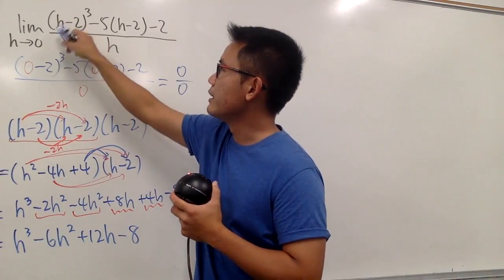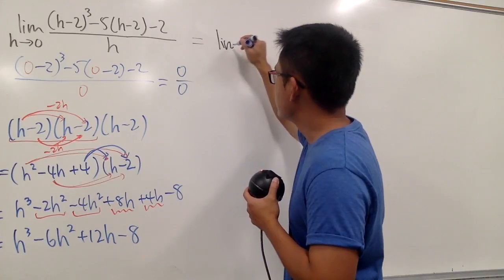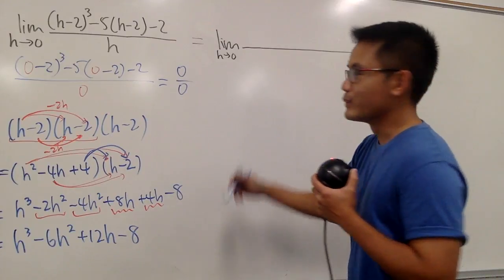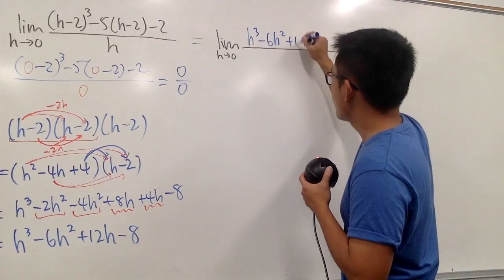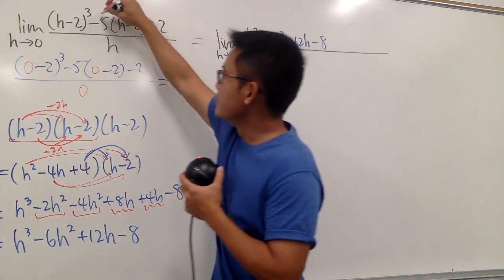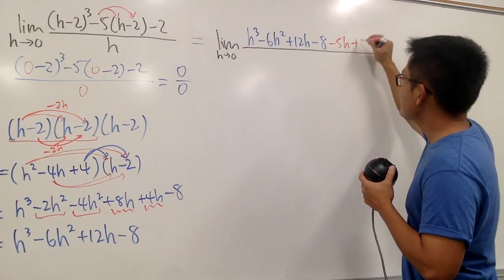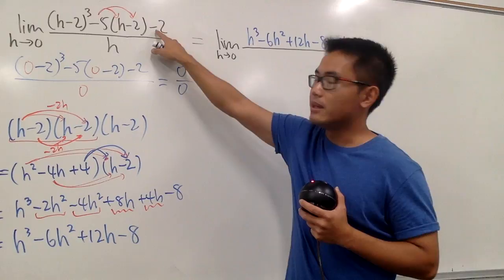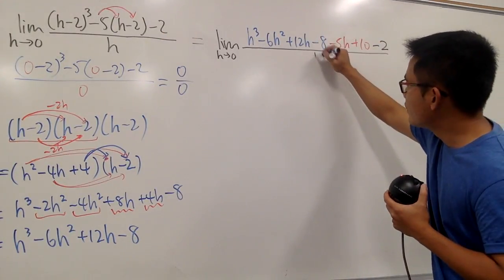For the (h-2) to the third power, this is equal to the limit as h goes to 0. We first put down h to the third power, minus 6h squared, plus 12h, and then minus 8. Next, we can just multiply the negative 5 into the parentheses, so we get negative 5h plus 10. And don't forget to put down the minus 2. All this is over h.